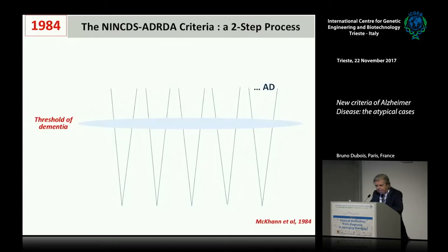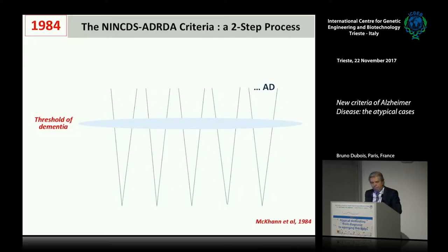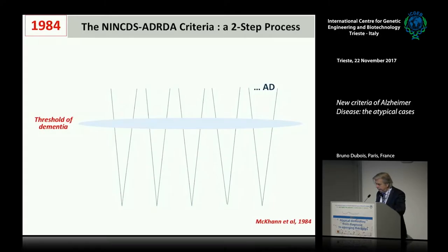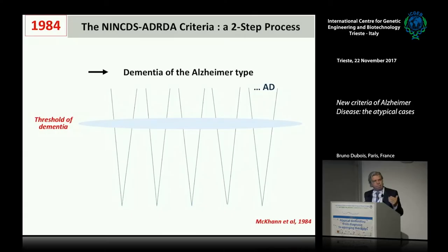Until recently, the diagnosis of Alzheimer's disease was based on a two-step process. Alzheimer's was considered as a dementia. First, the identification of a dementia syndrome, and then, by using different exams — MRI, CSF investigations, and biology — we were excluding the different other etiologies. At the end of the day, we were able to say this is dementia of the Alzheimer's type. So it was an exclusionary process.